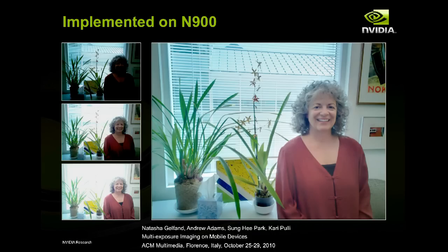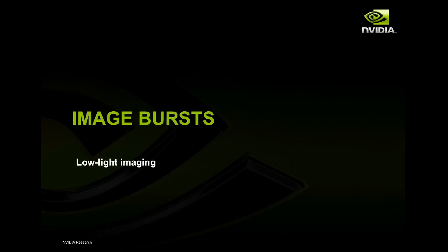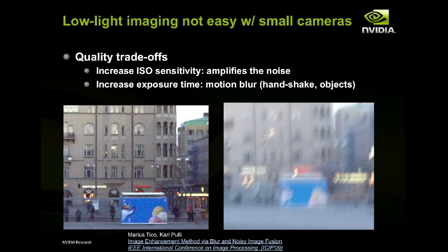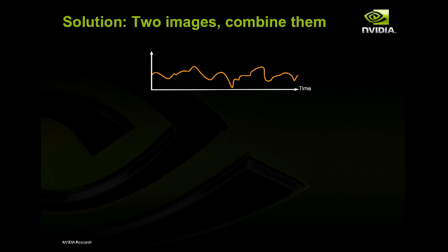This was implemented on the N900 and there's an example scene done with FCam — if you buy the Nokia N900, this is one of the applications you can download. Another application we wrote, also available for download, is low-light imaging. The problem is that if you don't have enough photons — if it's too dark and your sensor isn't sensitive enough — then you face two kinds of problems: noise or blur.